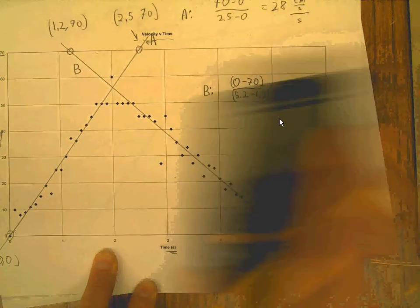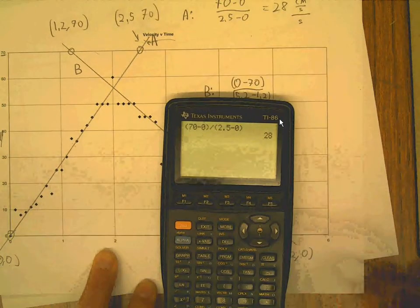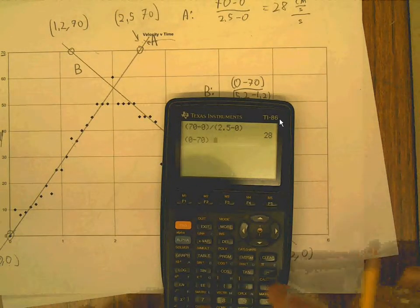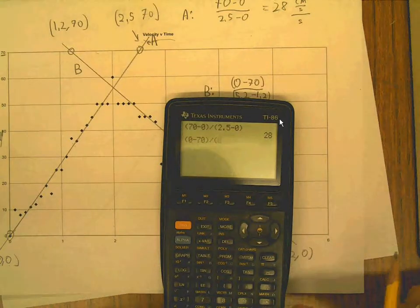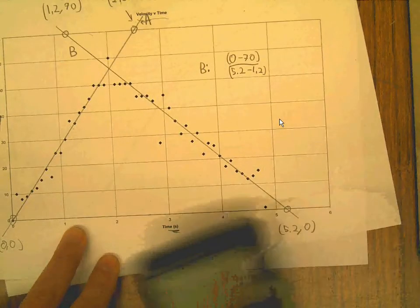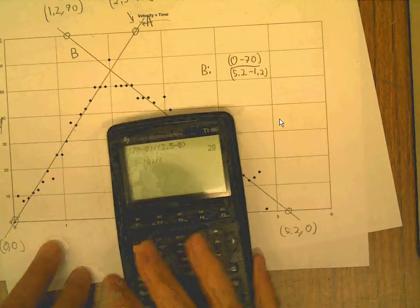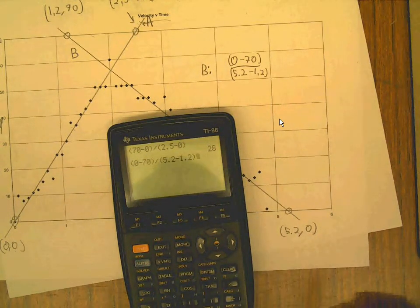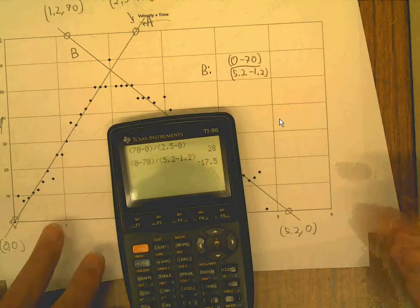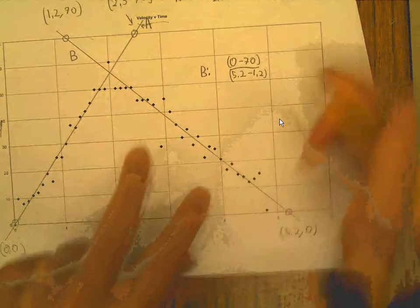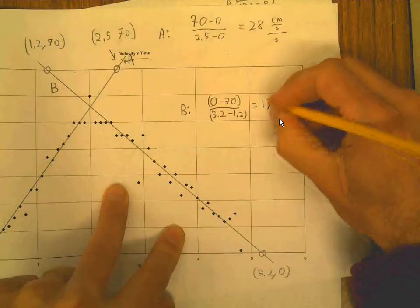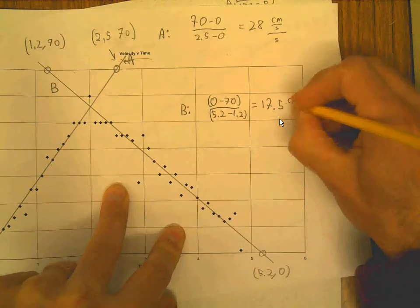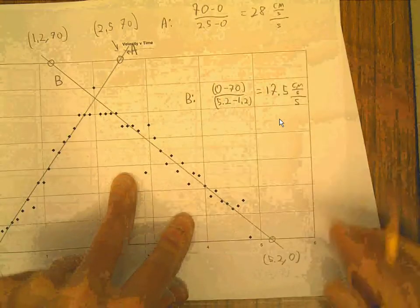Yeah? So parentheses zero minus 70 divided by, what was it? 5.2 minus 1.2, right? 5.2 minus 1.2 to the negative 17.5. And there's nothing to compare these two because we never calculated the acceleration. And that's centimeters per second per second, right?